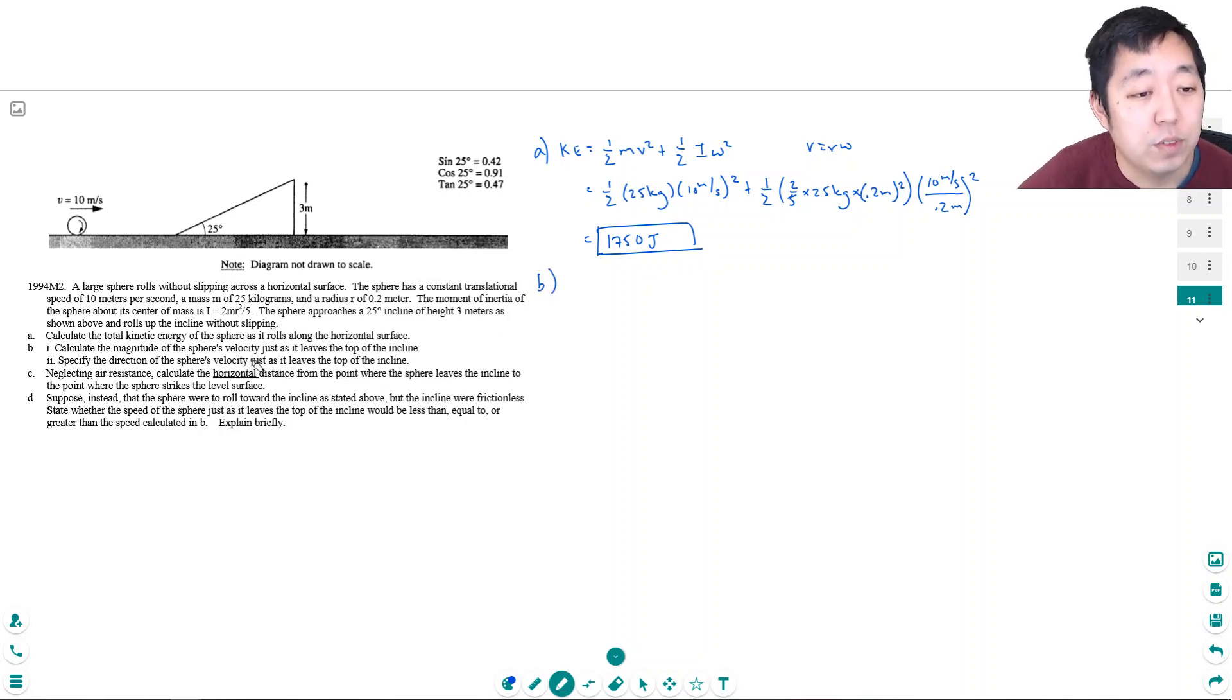Calculate the magnitude of the sphere's velocity just as it leaves the top of the incline. Okay, so at the top here, some of its energy has been converted into potential energy, right? So I got to subtract the potential energy. I kind of want to simplify this equation. So the total energy that I have at the top is one half mv squared plus one half i, which is two fifths mr squared times v over r squared, plus mgh, which is mgh. And that needs to equal 1750 joules. Okay, and my goal then is to solve for v.